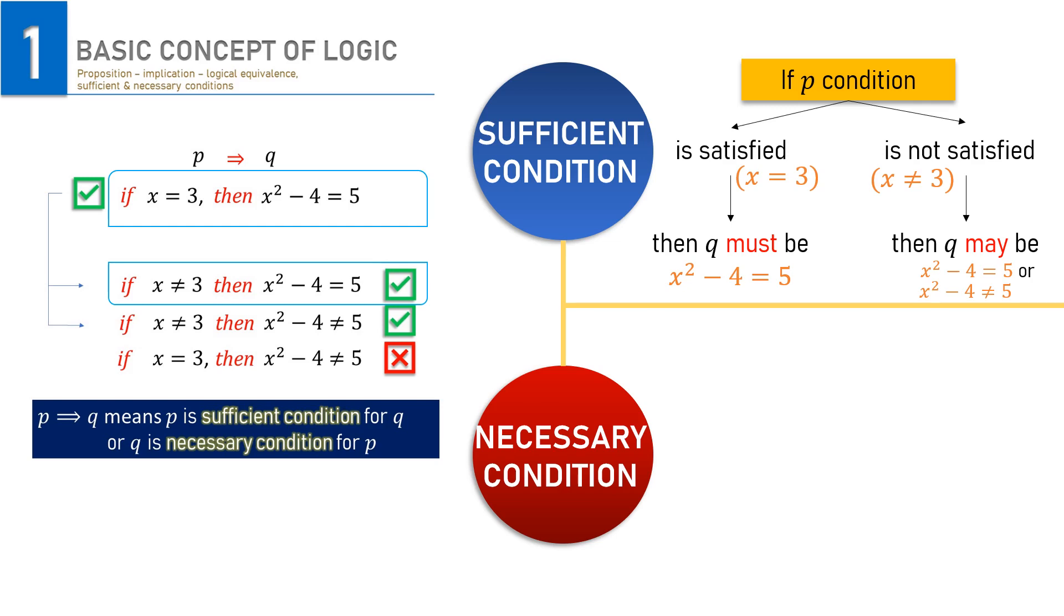So, as you may observe, this correct mathematical implications of P to Q also an indication for P as a sufficient condition for Q. If P is a sufficient condition for Q, then Q must be a necessary condition for P. Let's check it here.